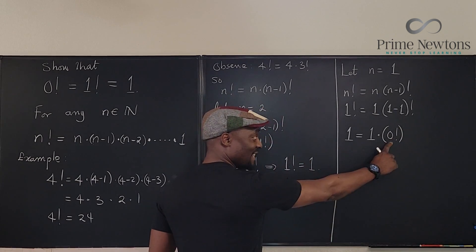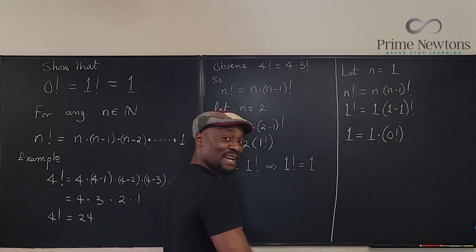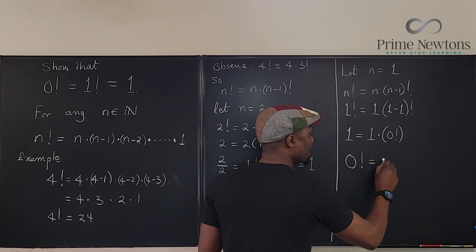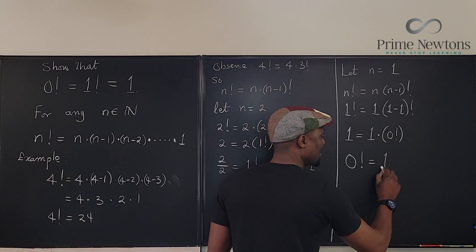So this is 1 equals 1 times 1 minus 1 is 0. So this is 0 factorial by dividing both sides by 1. So we can say that 0 factorial is equal to 1 over 1, which is equal to 1.